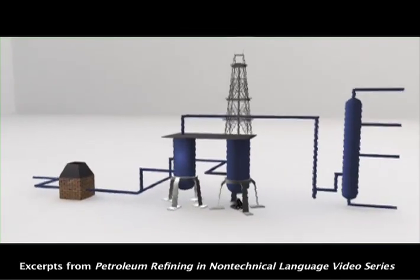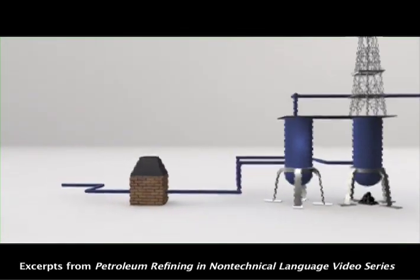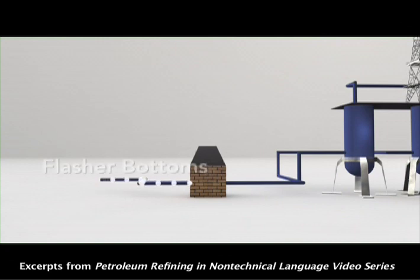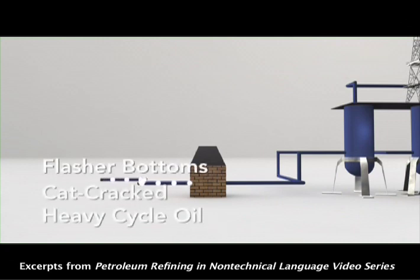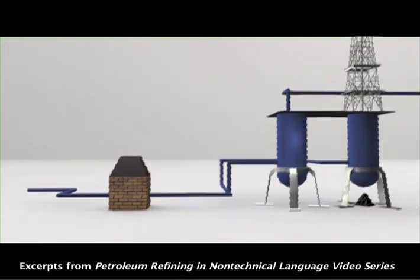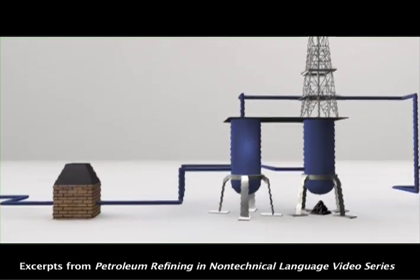The feed to a coker — flasher bottoms, or sometimes cat-cracked heavy cycle oil — is quickly heated in a furnace to about a thousand degrees Fahrenheit and then charged to the bottom of a coke drum.